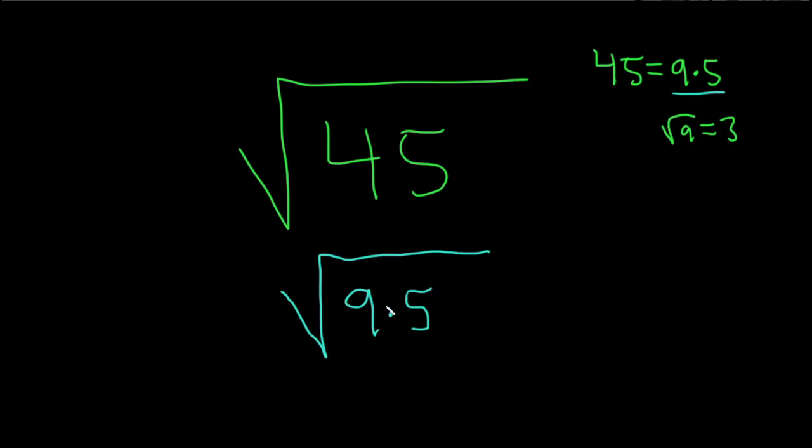Now we can break it up into two pieces. This will be the square root of 9 times the square root of 5. And then we know that the square root of 9 is 3, so this is simply 3 times the square root of 5. And that would be the final answer.